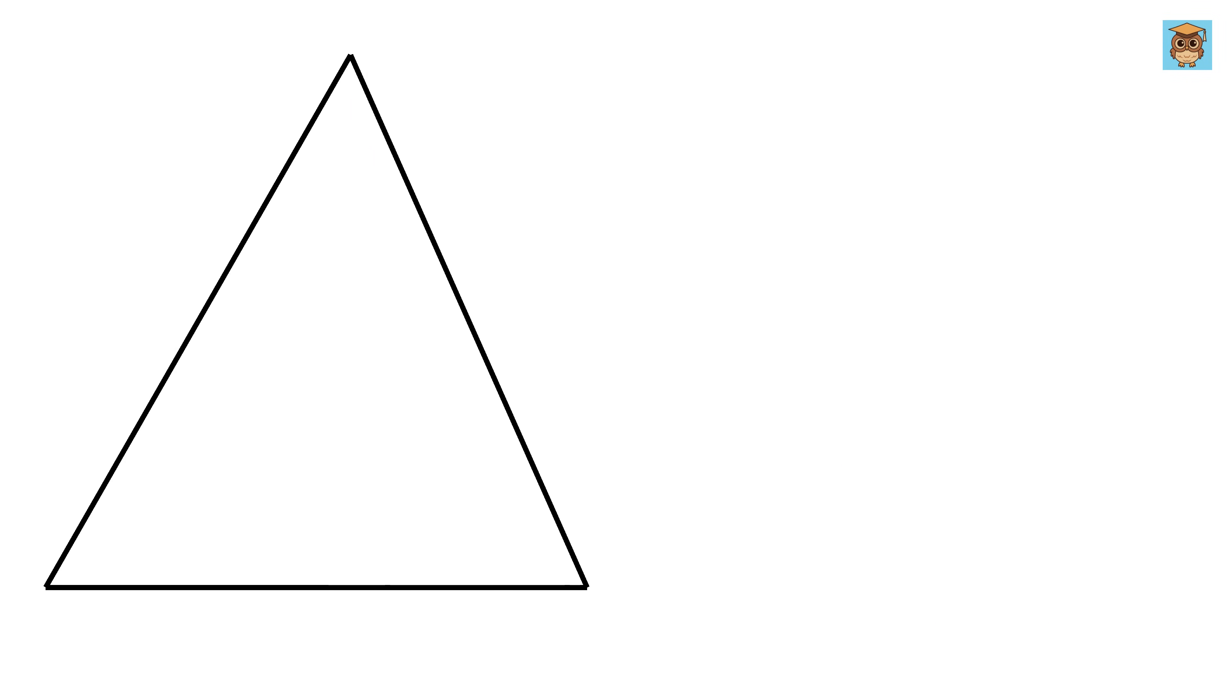We have a triangle whose angle is 45 degrees and this length is 5 units. Now when we draw a perpendicular line from this vertex to this side of the triangle, we get this side length as 2 and this is 3.